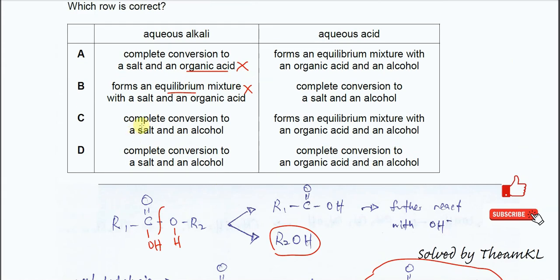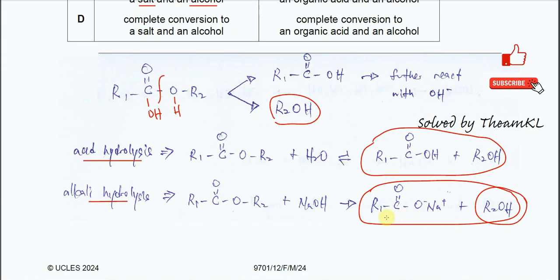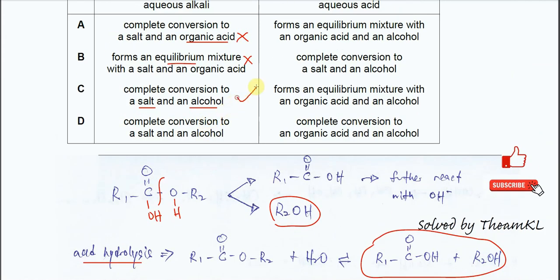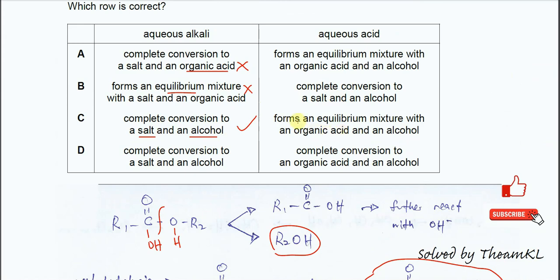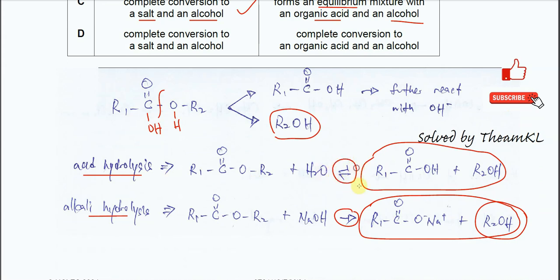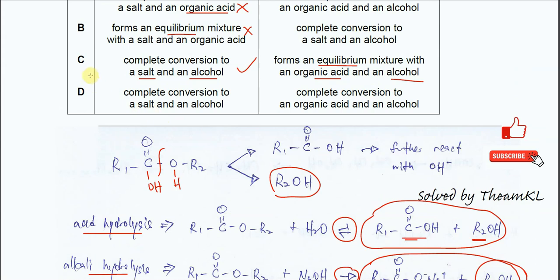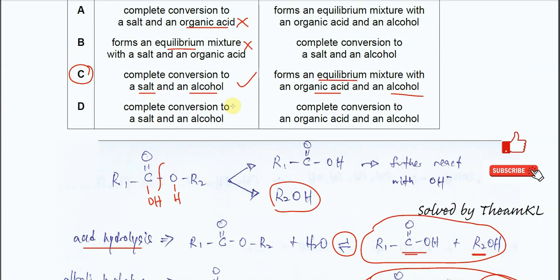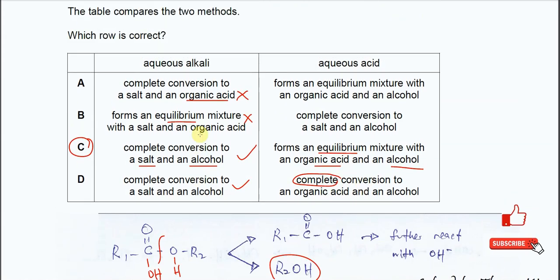For C: complete conversion to a salt and alcohol — yes, this is correct. Complete conversion means one direction, fully converting to salt and alcohol. For the aqueous acid hydrolysis, it will form an equilibrium mixture with organic acid and alcohol — acid hydrolysis does form an equilibrium, producing acid and alcohol. So the answer is very clear: it's C. Option D cannot be correct because even though the acid hydrolysis part may seem right, the alkaline part states complete conversion, which is not correct — it forms an equilibrium. Answer confirmed: C.